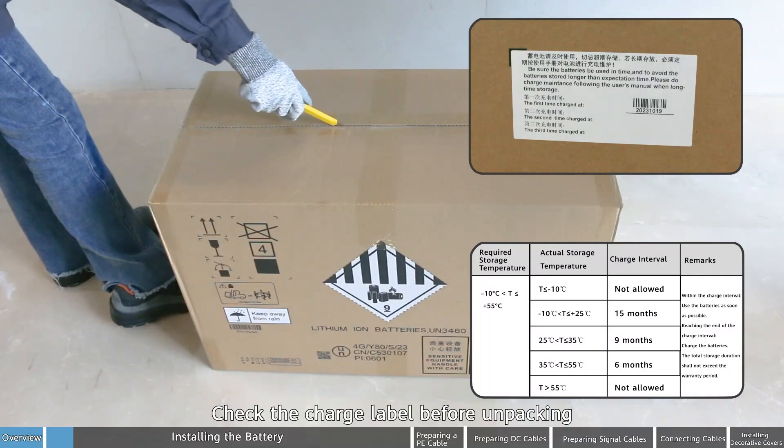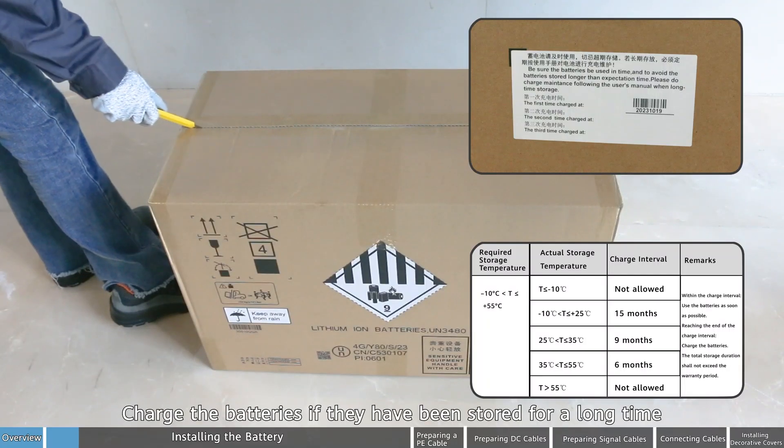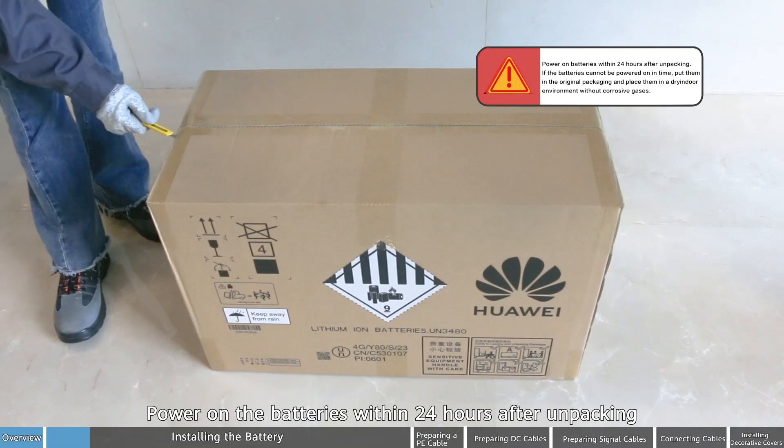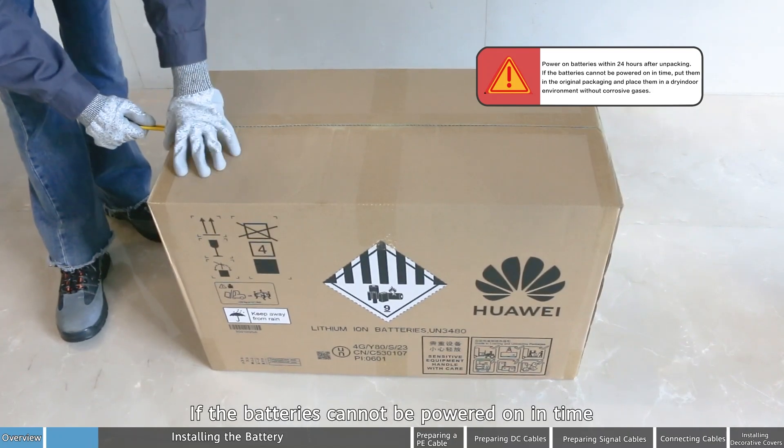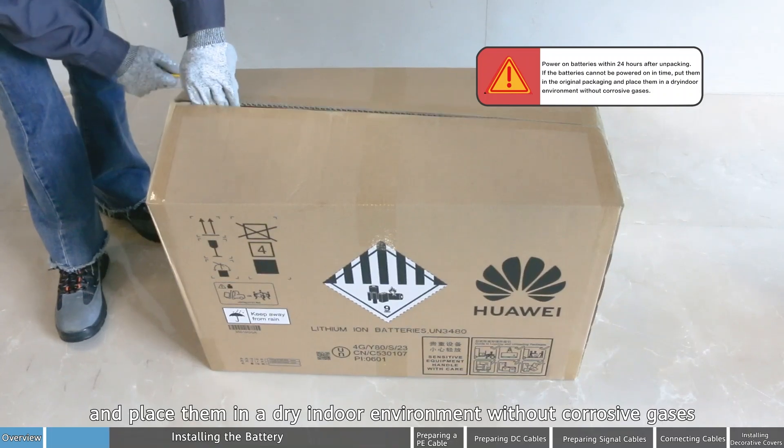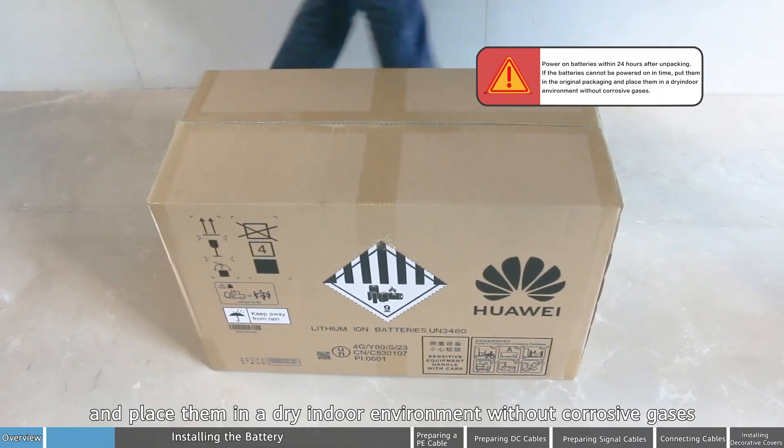Check the charge label before unpacking. Charge the batteries if they have been stored for a long time. Power on the batteries within 24 hours after unpacking. If the batteries cannot be powered on in time, put them in the original packaging and place them in a dry indoor environment without corrosive gases.